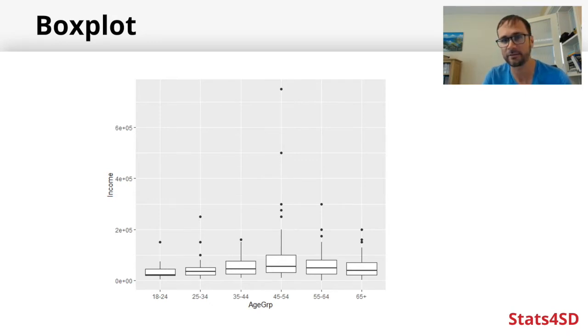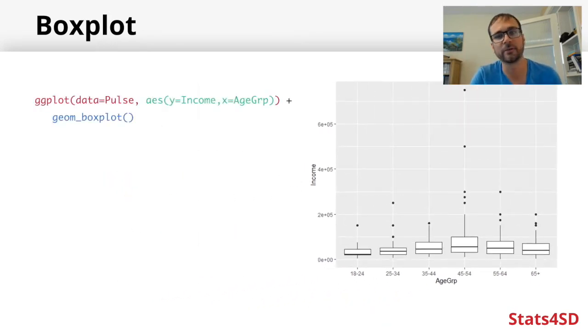We've got boxplots with annual income on the y-axis and age groups on the x-axis. The code would have looked something like this: we have our ggplot, set our data within the ggplot command, use the aes function to map the y-axis to income, the x-axis to age group, then close two brackets, add a plus sign, and then geom_boxplot.